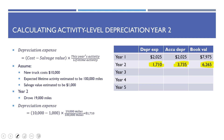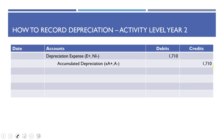Each depreciation method gives different amounts of depreciation expense. In general, a company should use one method for all its assets, though some companies use different methods in different divisions. The depreciation method chosen has a big effect on depreciation expense and therefore on profits. The journal entry is always debit depreciation expense, credit accumulated depreciation. Under straight line this amount is always the same, but under double declining balance or activity level it changes every year.